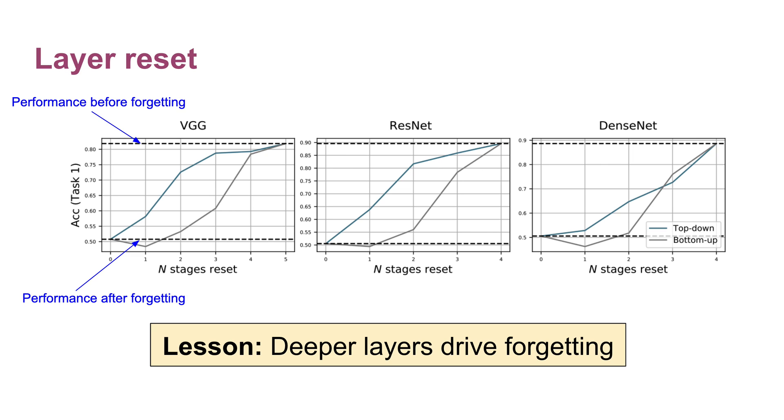In our paper, we have several more experiments which are designed to elucidate this fact that deeper layers are primarily the source of forgetting. But in the interest of time, I'll just show one more experiment using layer resets. In this experiment, we take the network after it's been trained on task two, reset the parameters of various stages to their values at the end of task one, and then evaluate the performance of the network on task one.